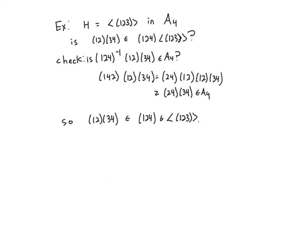Let's do an example. We'll look at the alternating group on four elements — the even permutations of four symbols. Let H be the cyclic subgroup of order 3, and we'll ask whether a given permutation is in a certain coset. Based on the theorem, all we have to check is whether this element inverse times the other element is in A4. The inverse of the 3-cycle gives us a certain element; rewriting the 3-cycle, we can cross off matching 2-cycles, and the result is a product of two 2-cycles, so it is in A4. Thus this element is in the coset, determined without exhaustively listing the coset.